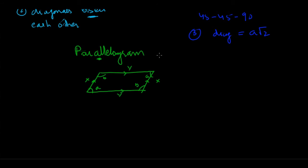If I draw the diagonals in a parallelogram, you'll see that one diagonal is shorter than the other — so the diagonals are not equal in a parallelogram. But the diagonals still bisect each other.